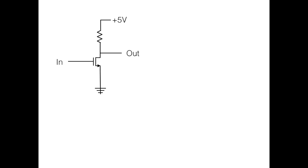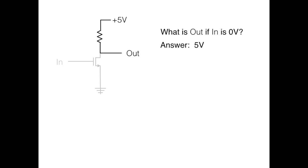Now I'm going to place this transistor in a circuit and figure out what it does. What is the output if the input is 0 volts? If in is 0 volts, we have turned the faucet off — there's no wire at the transistor — so it's like this portion of the circuit is gone. If we assume very little or no current, then there's no voltage drop across the resistor, and out is 5 volts. Now, what is out if in is 5 volts? If in is 5 volts, the transistor is effectively a wire, and out is connected through a wire directly to ground, or 0 volts. So out is 0 volts.